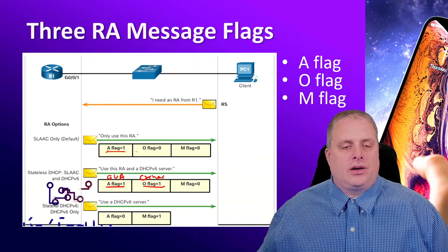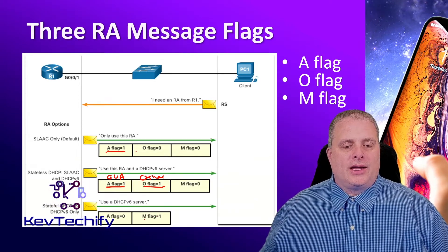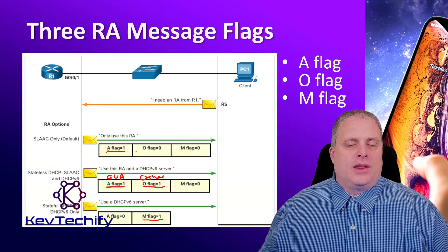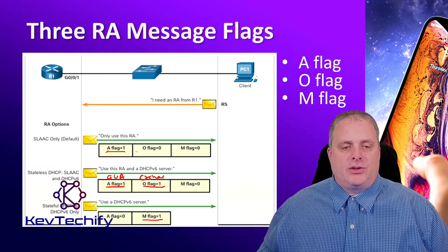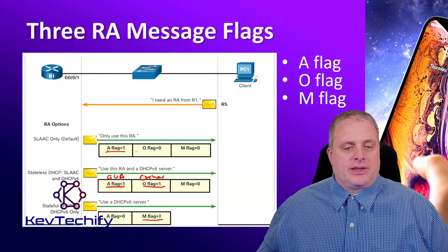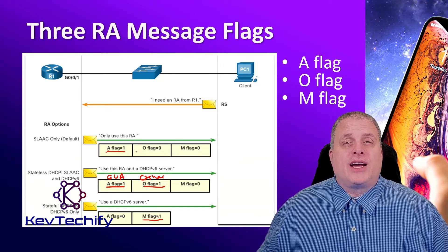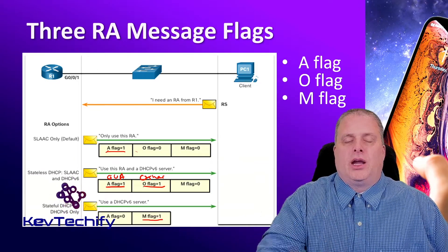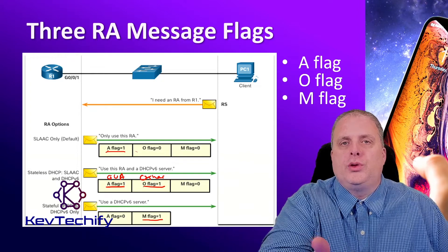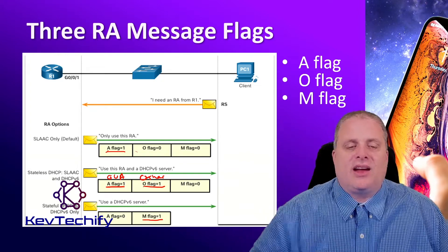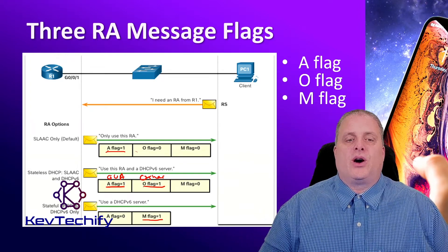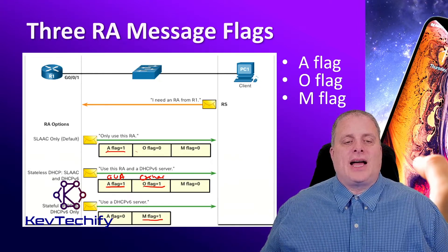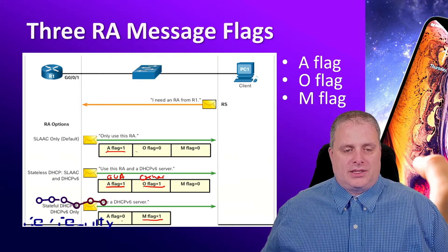The last combination is the M flag is set — the M flag is 1 — and the O flag is 0. The M flag, managed address configuration, when set in our router advertisement, means go out, contact the DHCPv6 server, and get all of your information: your global unicast address and any other additional information it has to offer. When this is set, the A flag is not set — that's set to 0.